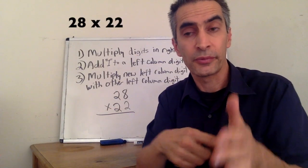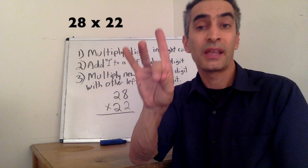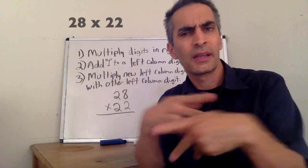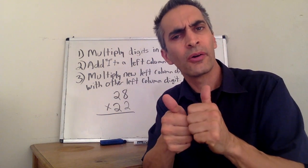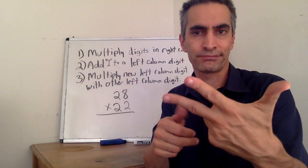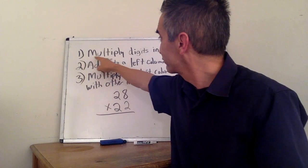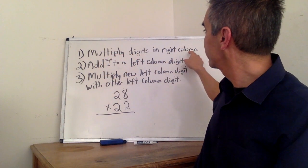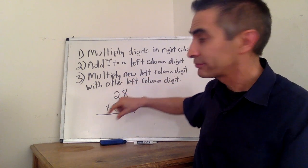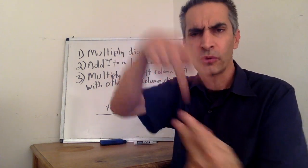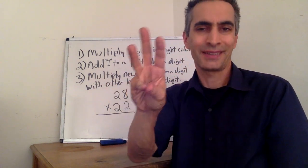Another example: 28 times 22. How are we going to multiply these numbers together? First, multiply digits in the right column. 8 times 2 equals 16.